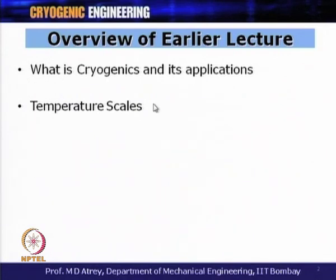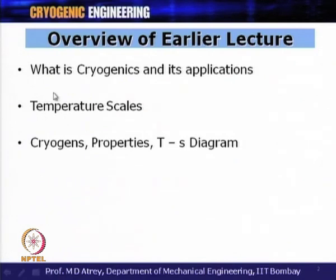In the second lecture, we talked about different temperature scales and concluded that one can positively use the Kelvin scale. We do not have to say 'minus 196 degrees centigrade' every time; we can say '77 Kelvin' using this temperature scale. We also talked about various cryogens and their properties.